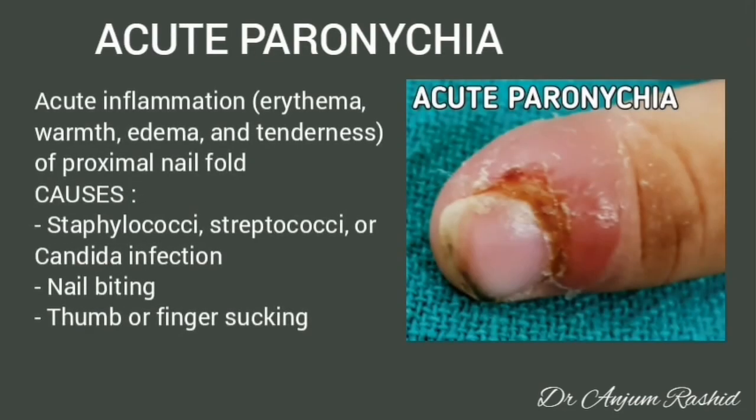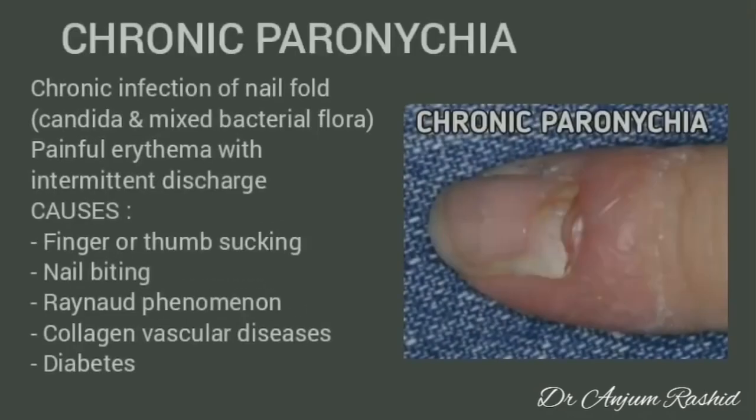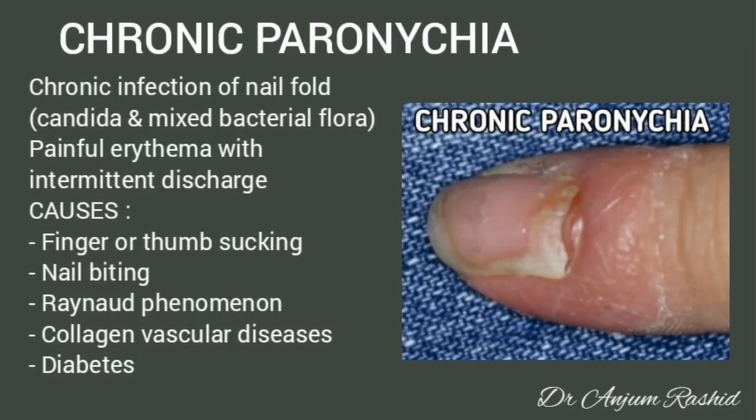Acute paronychia: there is acute inflammation — erythema, warmth, edema, and tenderness — of the proximal nail fold. Causes include staphylococcal, streptococcal, or candida infection. Nail biting and thumb or finger sucking are predisposing factors.